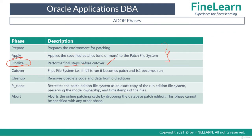You can abort the ADOP patch cycle only during the prepare and apply phases — once finalize has run, you can no longer abort. During cutover, the file systems are flipped: if FS1 is run it becomes patch, and if FS2 is patch it becomes run. This is where the actual downtime occurs; all other phases have no downtime. Cleanup removes obsolete code and old database editions. FS clone is run manually when you need to recreate the patch edition from the run edition, and is typically only needed after an abort.